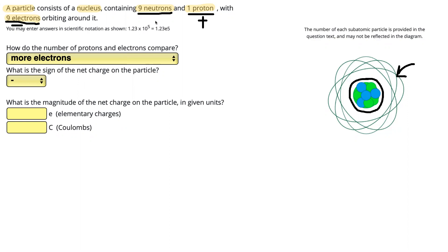Neutrons, remember, are neutral. They have a charge of zero, so they don't affect the charge either way.